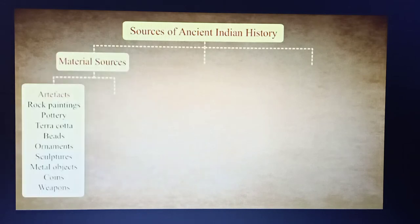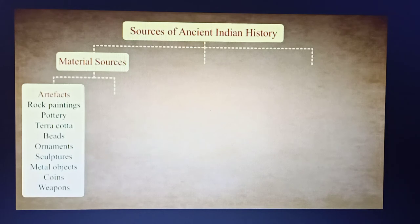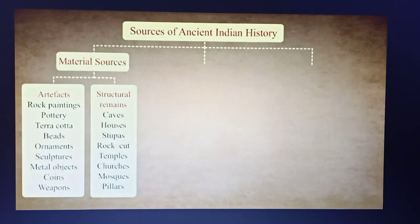Material sources include: artifacts such as rock paintings, pottery, terracotta objects, beads, ornaments, sculptures, metal objects, coins, and weapons; as well as structural remains like caves, houses, stupas, rock-cut caves, temples, churches, mosques, and pillars.